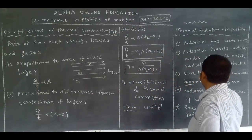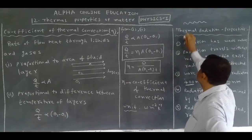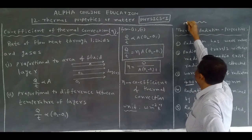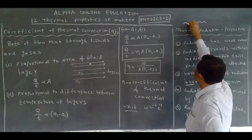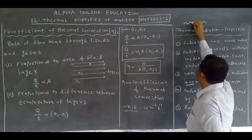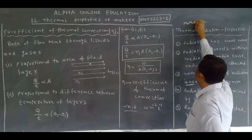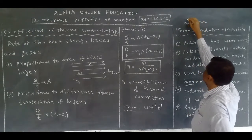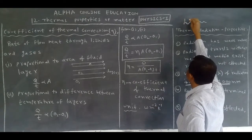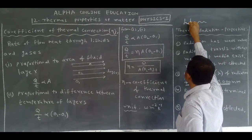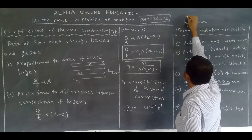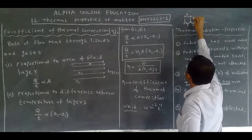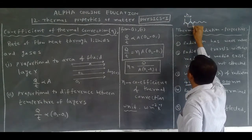Third property: wavelength. In a wave, the upper part is called the crest and the lower part is called the trough. The distance between two successive crests or two successive troughs is called the wavelength, represented by lambda.